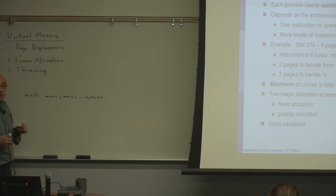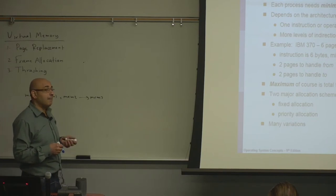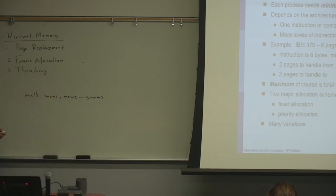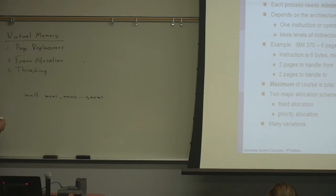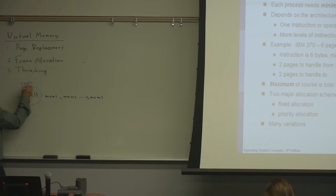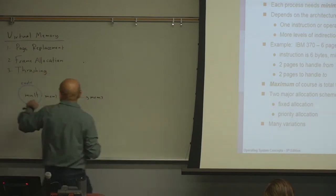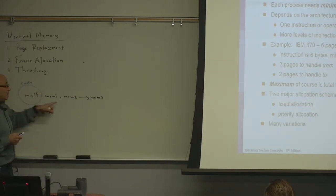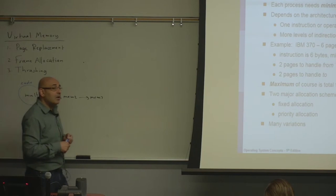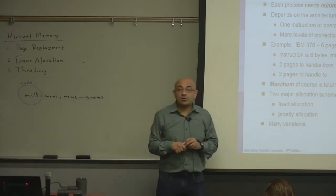There is also a fourth page that may be accessed — the instruction itself. The code itself is in memory, and it could be in a different page. Most likely, the page containing the code will be different from the page containing the data. So we have one page of code and three pages of data, meaning this instruction can access four pages and may result in four page faults.